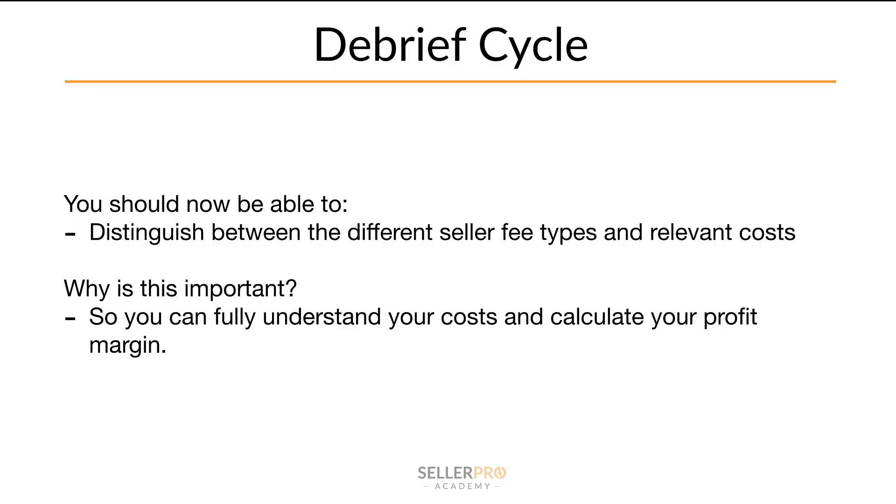So here's a little debrief. By now you should be able to distinguish between the different seller fee types and their relevant costs. Why is it important? So you can fully understand your costs and calculate your profit margins. Make sure you understand all your fees — don't just think you have your FBA fee and that's it, or your selling fee and that's it. Be fully aware of all of them. The links in the description hold all this information. Amazon makes it very clear and easy to find. If you have any questions, leave a comment below. If you enjoyed it, smash the like button and subscribe with notifications on. And remember — you're just one product away. Bye-bye.